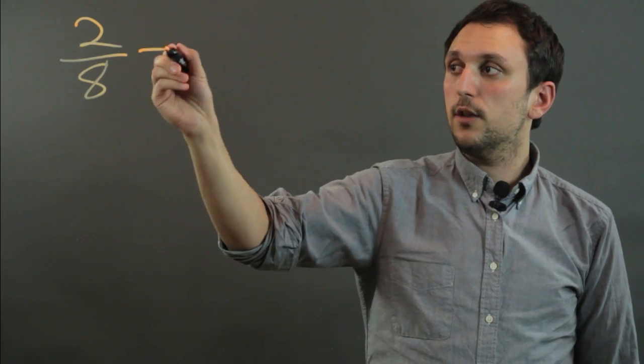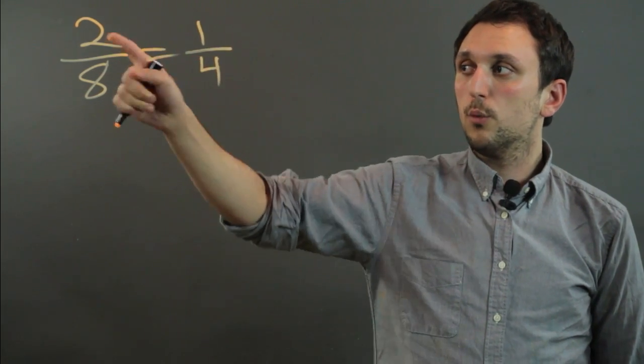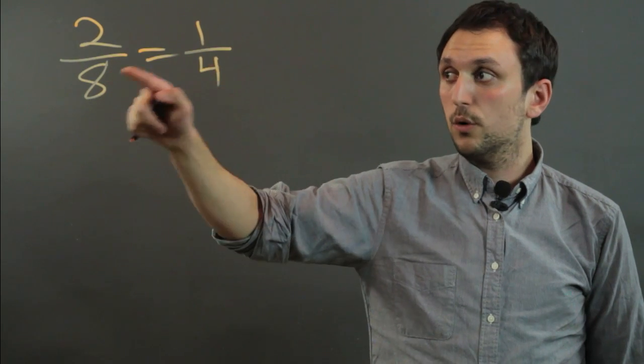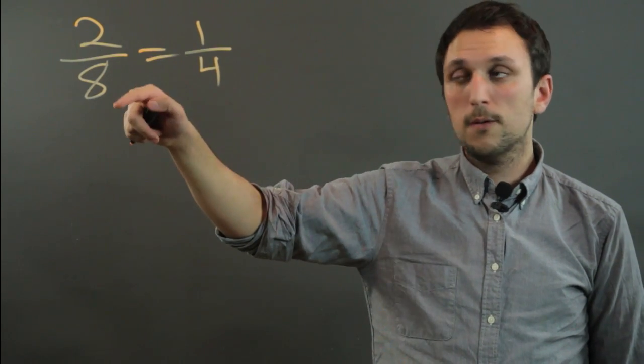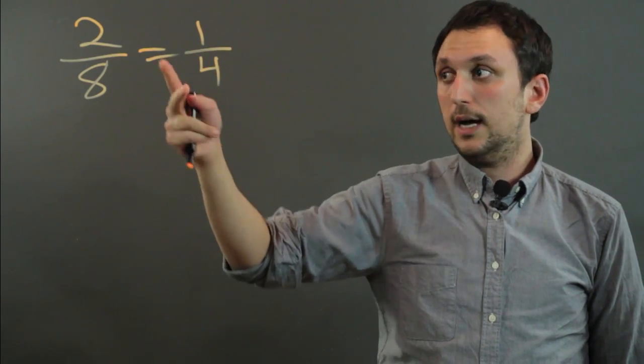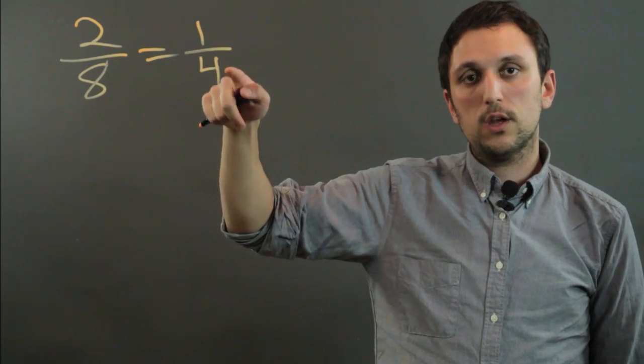So if we simplify it to 1 over 4, we're factoring both the numerator and the denominator. We're dividing each by 2, because 2 goes into both. 2 is a factor of both. And 1 out of 4 is like saying you had 2 out of 8, because for each 4 slices, you had 1.